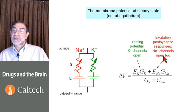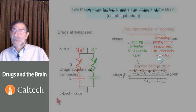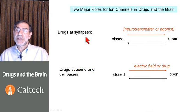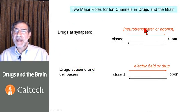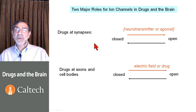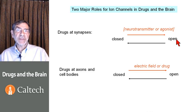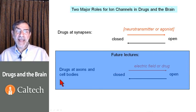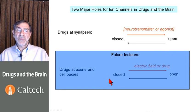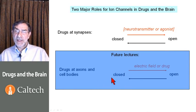Excitatory postsynaptic responses, sodium channels open too. So there are two major roles for ion channels in drugs and the brain. At synapses, which we've discussed in this lecture, we have a neurotransmitter or an agonist changing ion channels from closed to open and changing the potential across the cell. The importance of changing the potential across the cell is that this changes the frequency of action potentials. In addition, at axons and cell bodies, drugs can change the equilibrium between closed and open voltage-gated channels, and we will talk about that in future lectures.